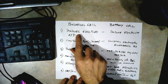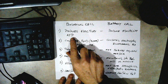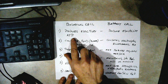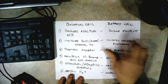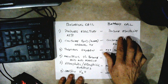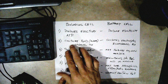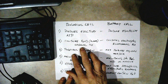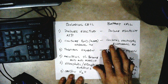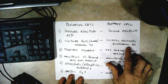Biological cells produce electricity, and the primary molecule involved is ATP — adenosine triphosphate. Battery cells, of course, produce electricity too. Biological cells consume food, usually sugar, in organic reactions. And battery cells consume electrolytes in inorganic reactions.